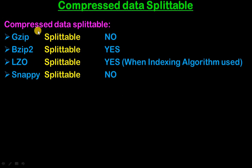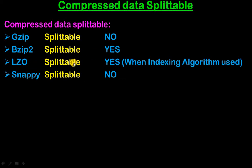Next is whether compressed data is splittable. Gzip compressed data is not splittable. Bzip2 compressed data is splittable — yes. LZO compressed data is splittable when an indexing algorithm is used. And Snappy compressed data is not splittable.